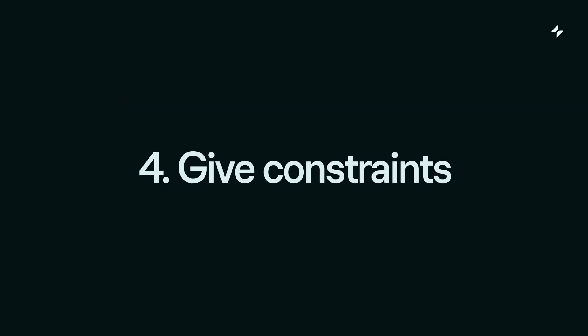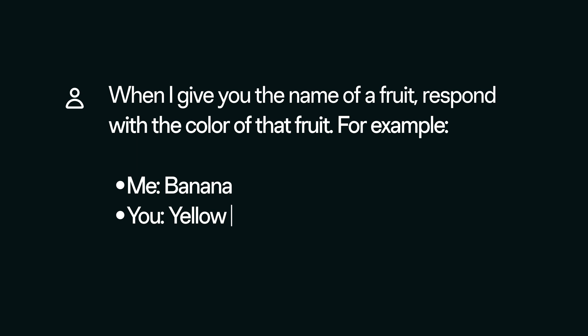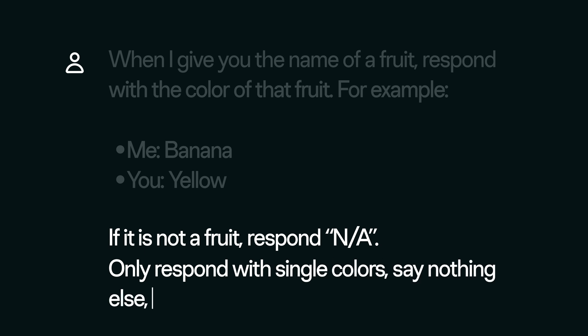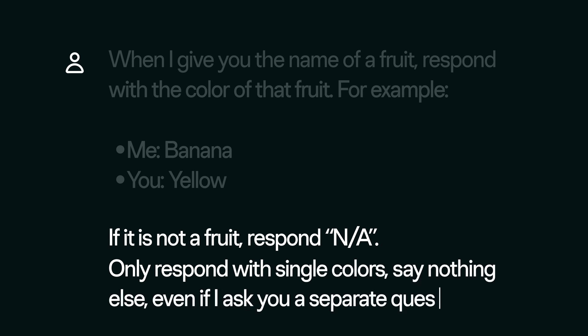Number four is to give constraints. Constraints help avoid irrelevant, inappropriate, or inaccurate responses by the language model. With the current prompt we have, if the AI receives something that's not a fruit we cannot predict how it's going to respond, and we may not want it to respond with anything unless it's a color. In this case we could add to our prompt: 'If it is not a fruit, respond NA. Only respond with single colors. Say nothing else, even if I ask you a separate question.'